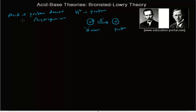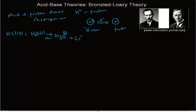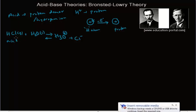Let's get back to the definition of a Bronsted-Lowry acid. They said an acid is a proton donor. For example, hydrogen chloride gas dissolved in water produces hydronium ion (H₃O⁺) plus chloride ion. This is a reversible reaction — it happens both ways. HCl is a Bronsted-Lowry acid.